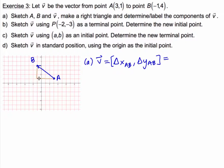Which gives us 1, 2, 3, 4 to the left or negative 1 minus 3 is negative 4 for the delta x and we are rising or increasing by 3 for the y because we have 4 minus 1. So we have the components of v.